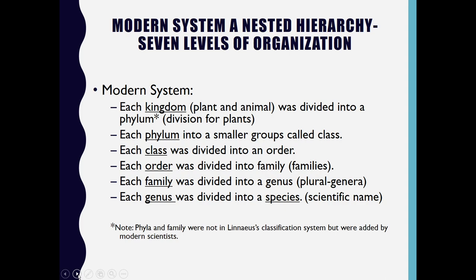The hierarchy levels of the modern classification system are: Kingdom, Phylum, Class, Order, Family, Genus, and Species. Linnaeus's original classification did not include Phylum and Family. The Phylum and Family were added into the modern system of classification by modern scientists.